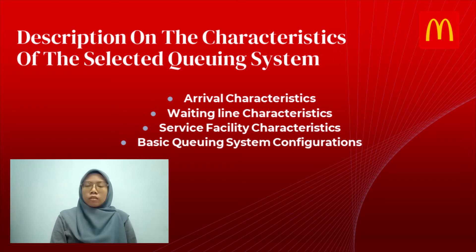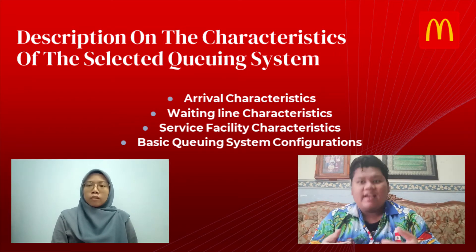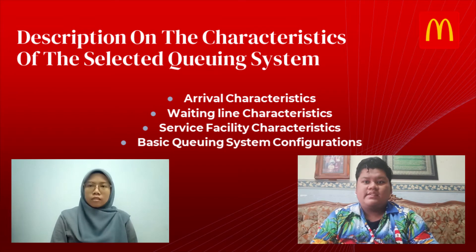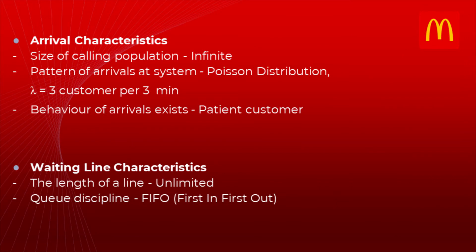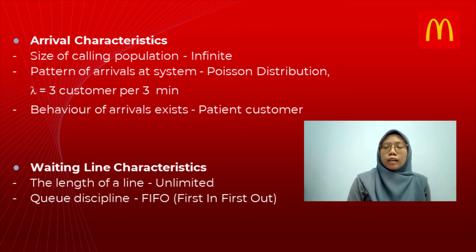We will explain the description and characteristics of the selected system, which include arrival characteristics, waiting line characteristics, service facility characteristics, and basic queuing system configuration. For arrival characteristics, the size of the calling population is infinite, meaning unlimited. This can be seen where cars arrive at the drive-thru at any time. The pattern of arrivals follows the Poisson distribution, where lambda equals three customers per minute.